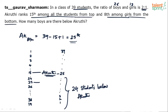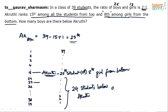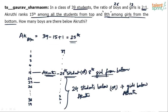Akruti is the 8th girl from the bottom, which means there are 7 girls below Akruti. The question asks how many boys are below Akruti. Total students below Akruti: 24. Of those, 7 are girls. So the number of boys below Akruti is 24 minus 7, which is 17.